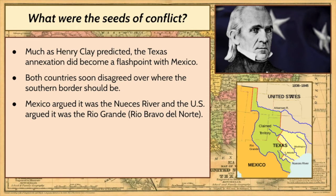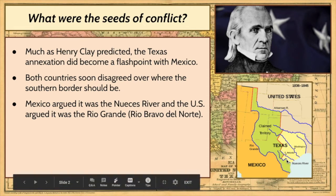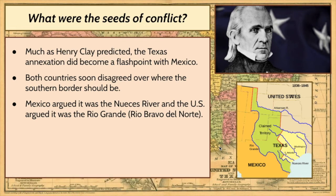Both countries basically disagreed over where the southern border of Texas should be. Mexico argued that it should be the Nueces River, which was much farther to the north. The United States argued it should be the Rio Grande, which is much farther to the south. Here's the Nueces River right here — I'm tracing it with my cursor — and the Rio Grande is right here. The Rio Grande has the Big Bend, which would have given the United States all of this territory, much more than if the Nueces River had been the border. In Mexico, the Rio Grande is referred to as the Rio Bravo del Norte.